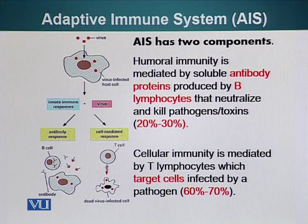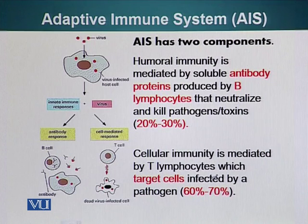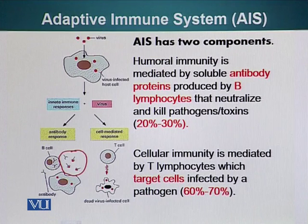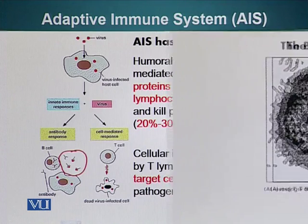So for now, we will just say that B cells can produce antibodies, which can bind toxic material or pathogens and cause inactivation directly or recruit other elements of the immune system and neutralize them. T cells, on the other hand, can go and destroy cells that have become infected by viruses or other pathogens.